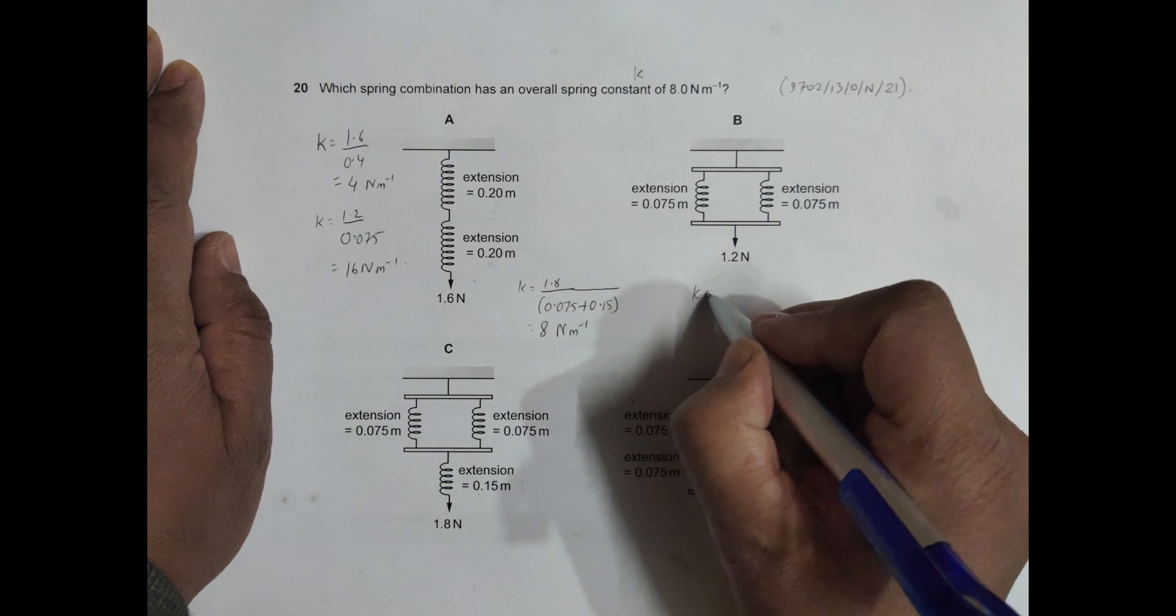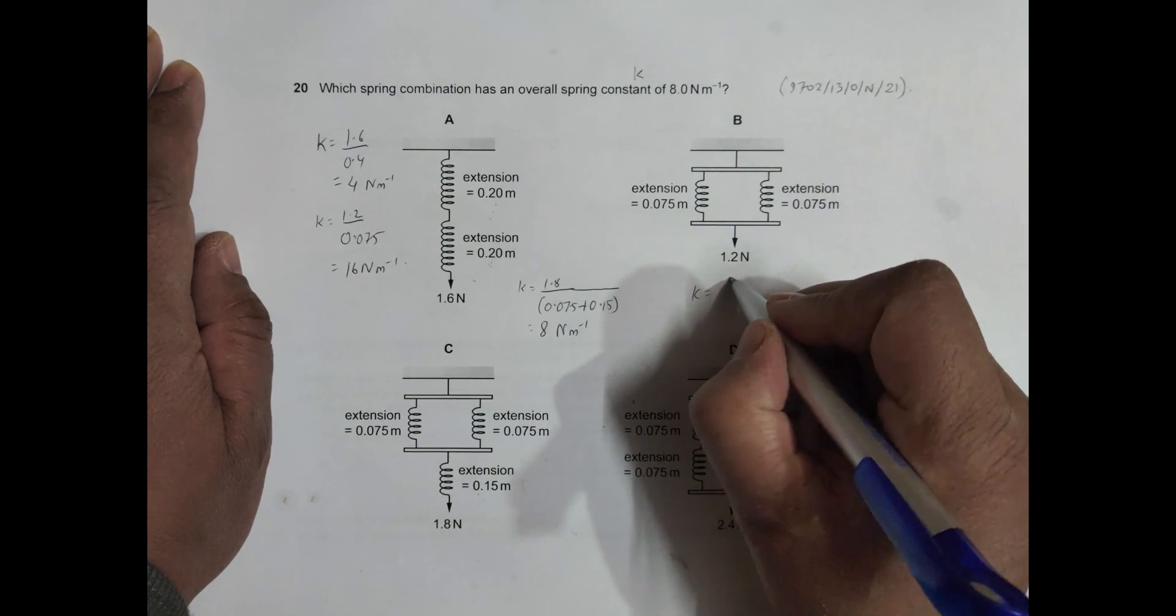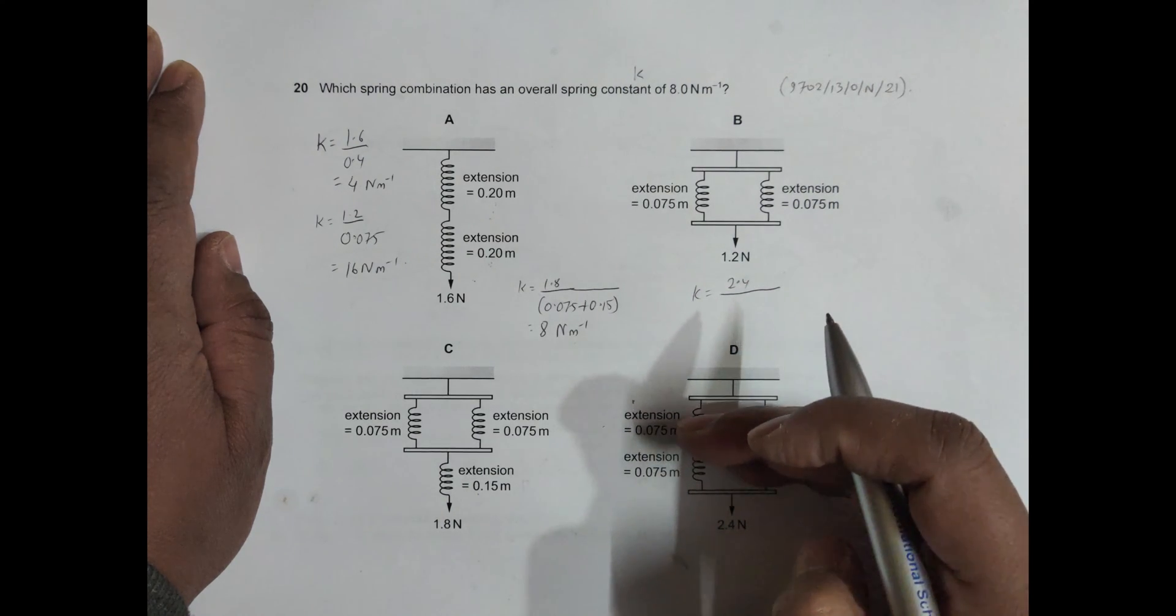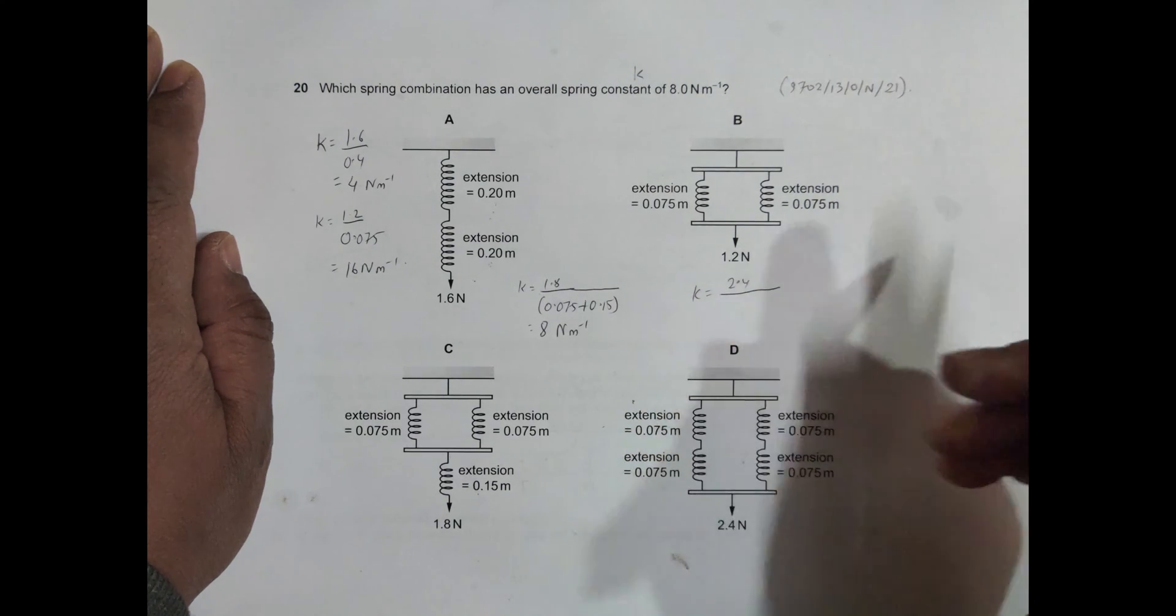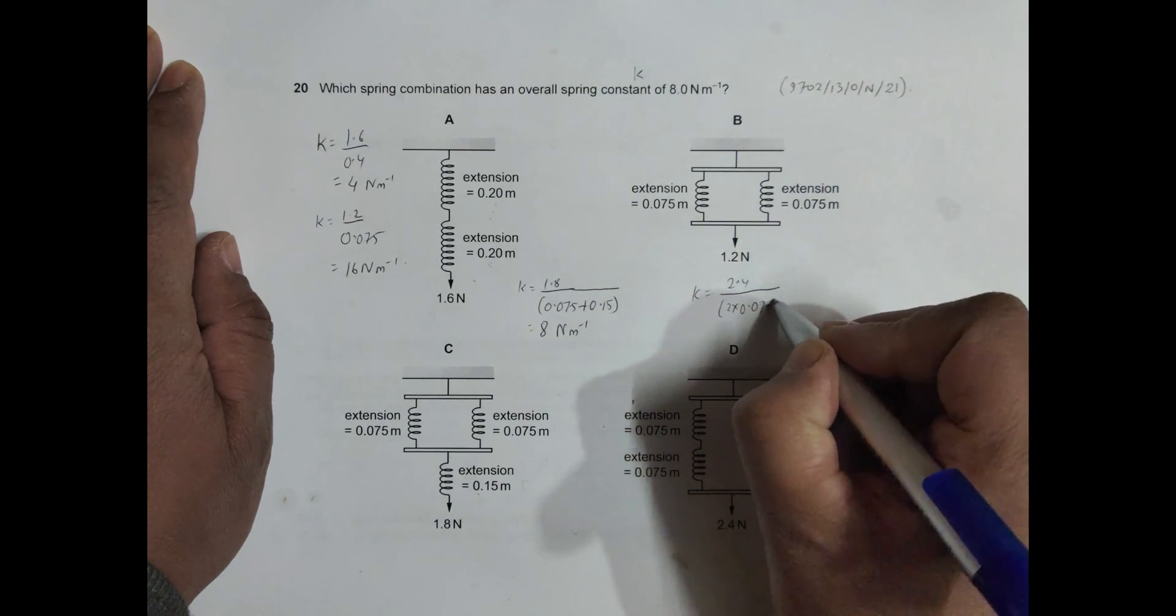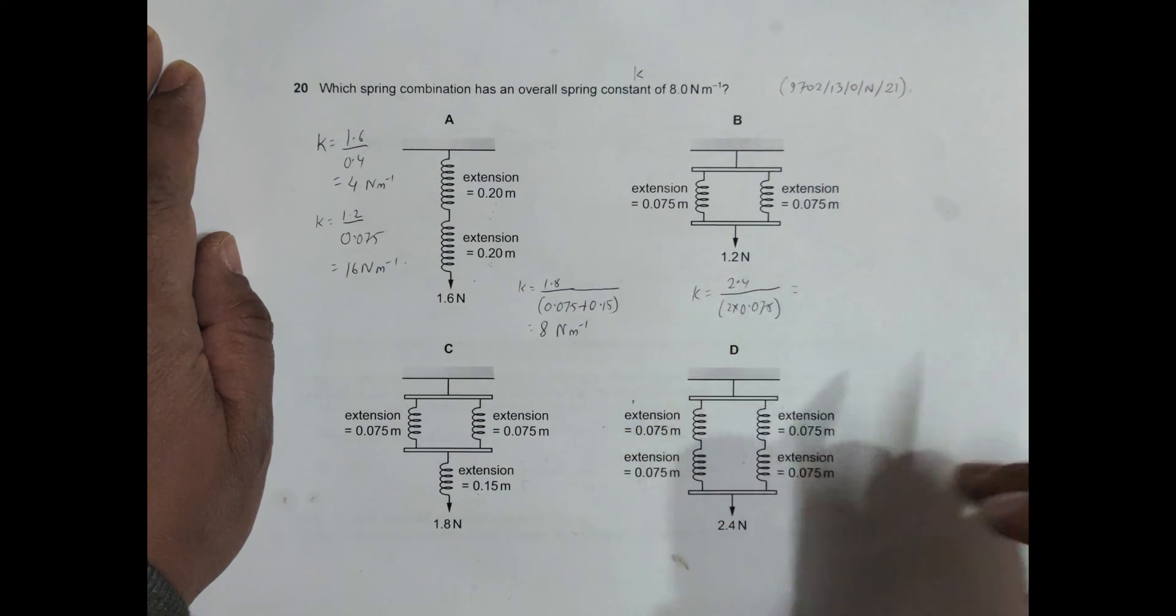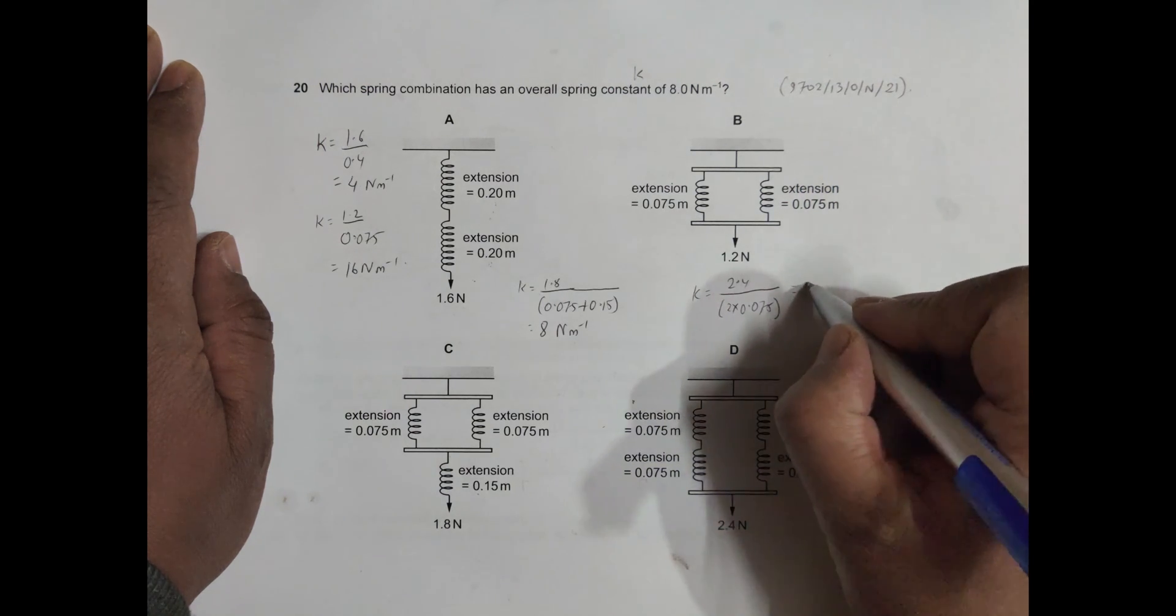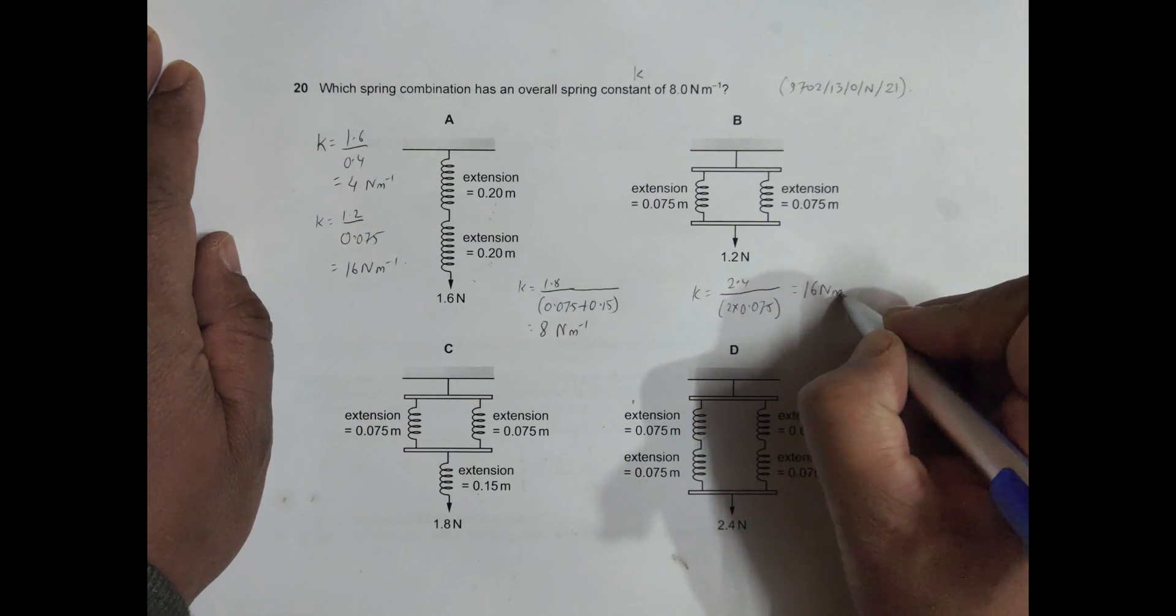Now let's try D also. The K equals the overall force 2.4 Newton divided by, we have this goes 0.075, this goes 0.075, so it is 2 into 0.075. So it will be 2.4 divided by bracket 2 into 0.075, which equals 16, so 16 Newton per meter.